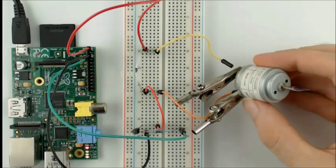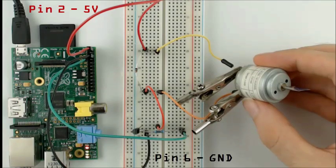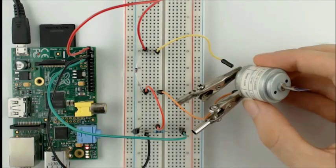As mentioned before, we need three connections to the Raspberry Pi: one to 5V, one to ground, and one to a GPIO pin. Let's give it a go.